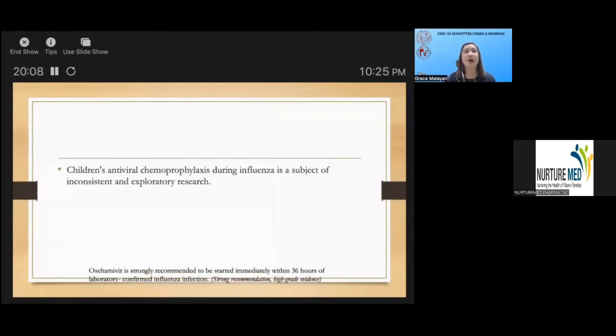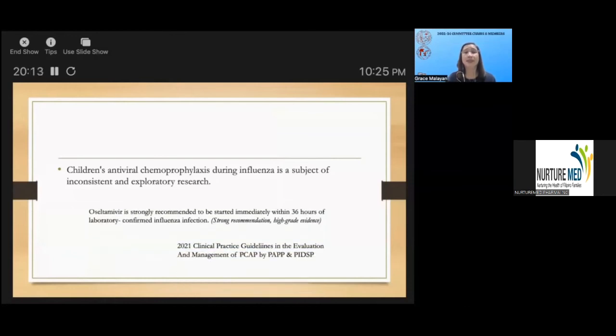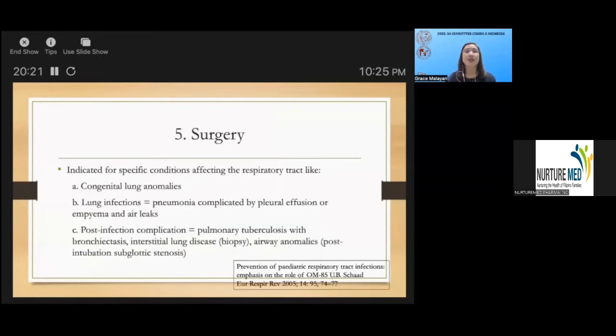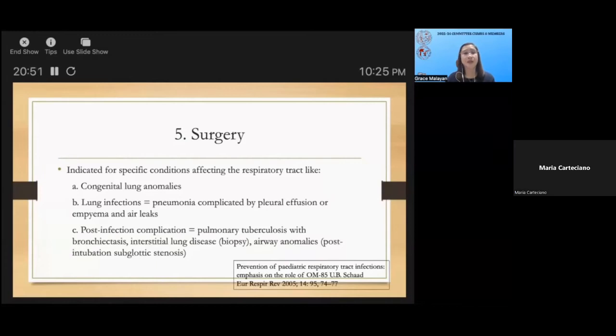What is the role of surgery in preventing respiratory problems in children? It is indicated in several conditions: congenital lung anomalies like hypoplasia attributed to congenital diaphragmatic hernias, congenital lobar emphysema, CPAM, and pulmonary AV malformations. Also lung infections - pneumonia complicated by pleural effusion or empyema or air leaks may warrant chest tube insertion, and post-infection complications such as in pulmonary tuberculosis.